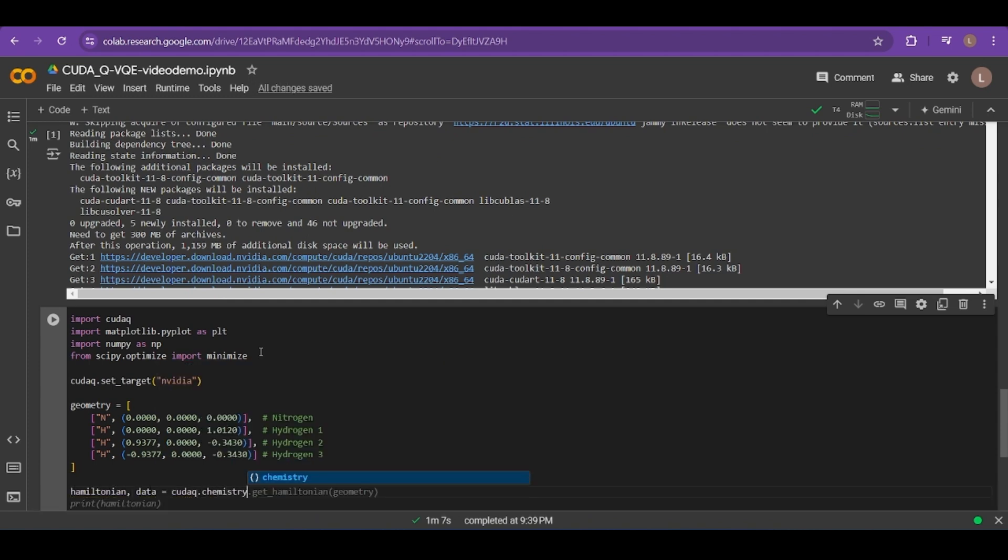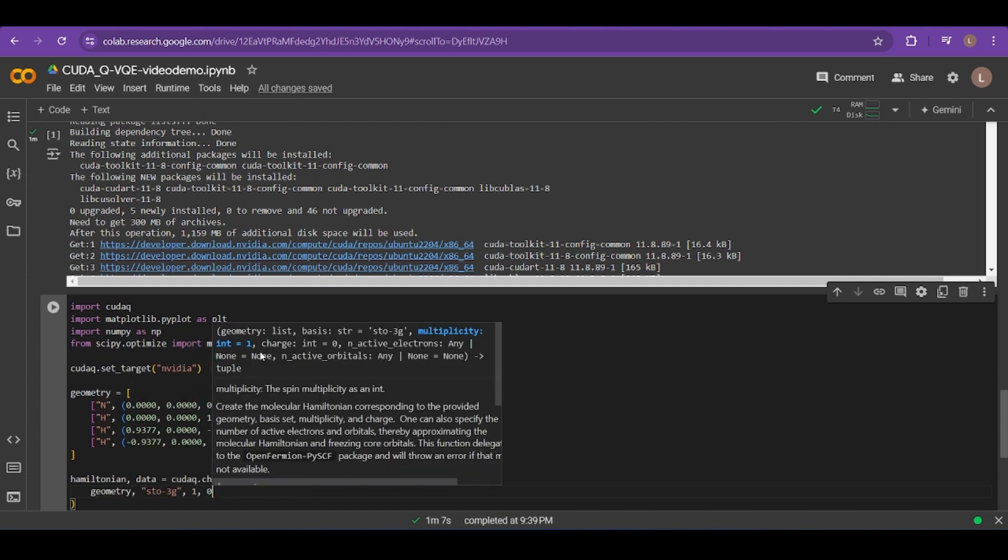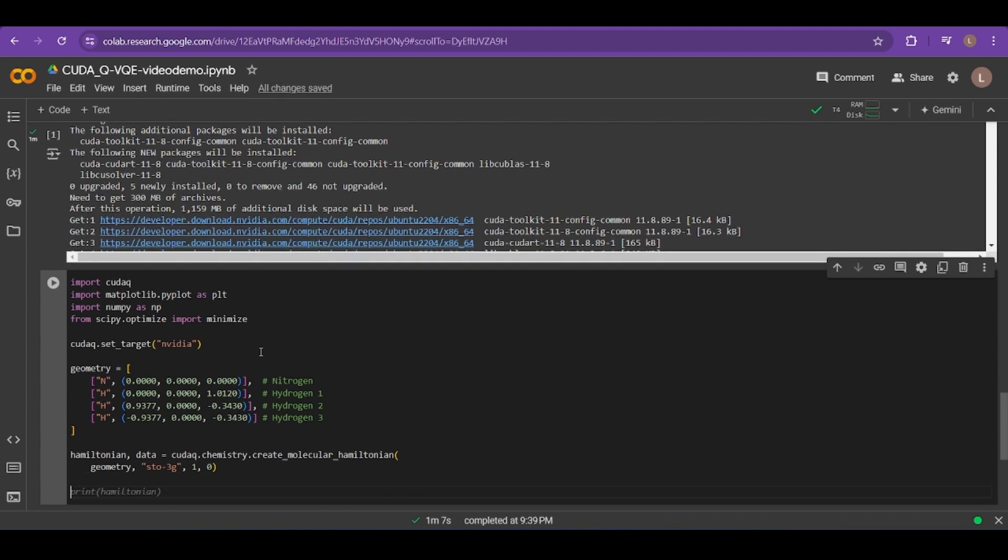Remember, the Hamiltonian is the sequence of quantum operations that we pass into our quantum computer, and it mathematically describes the energy of our ammonia molecule. By using this Hamiltonian in conjunction with the ansatz on a quantum computer, we should be able to extract the energy from our molecule.